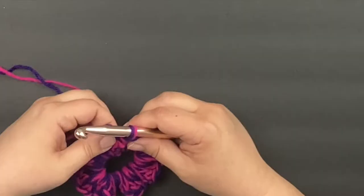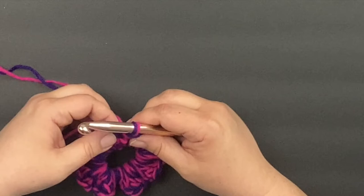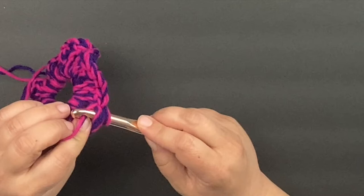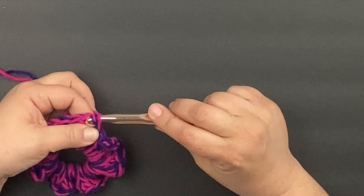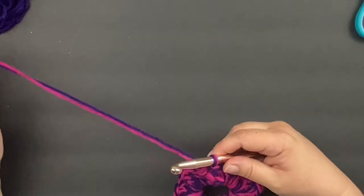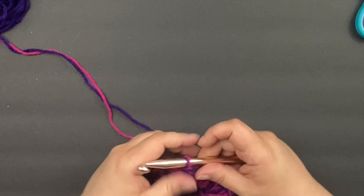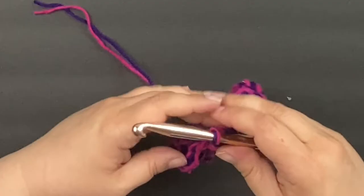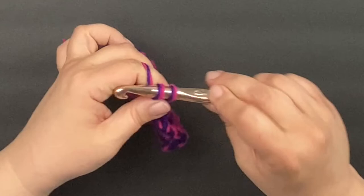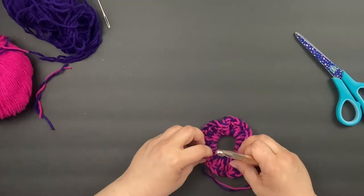Now I've gone all the way around my circle, and so the only thing we need to do is insert my hook into the top of this chain three. I'm going to pull my yarn through that, and then pull my yarn through again, and then cut off my tail, and then pull that through all the way. Make a knot there, and now all I have to do is weave in my ends.